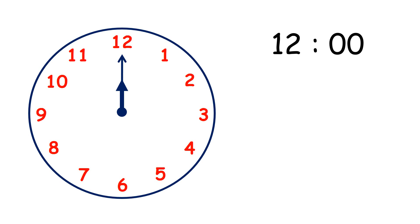Now we have the time showing 12 o'clock and we're going to learn how to tell the time to the nearest five minutes. So let's count on in steps of five minutes from 12 o'clock. Now we have 12:05 or 5 minutes past 12, so when the minute hand is at 1, it's 5 past.